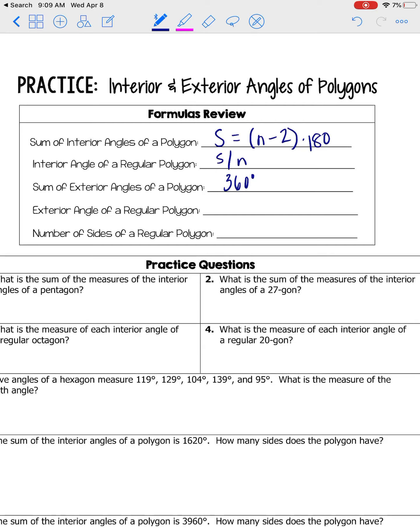And then the way that we can find one exterior angle of a regular polygon is really similar to how we find one interior angle of a regular polygon. So we have to take the total, which in this case is 360, it's not S, because it's the same every time. And we're putting that over the number of angles that we have. So 360 over n.